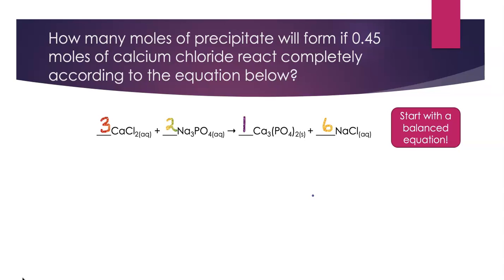What am I solving for? I'm solving for moles of precipitate. That would be the solid. So I want to know how many moles of calcium phosphate I will make if 0.45 moles of calcium chloride react.